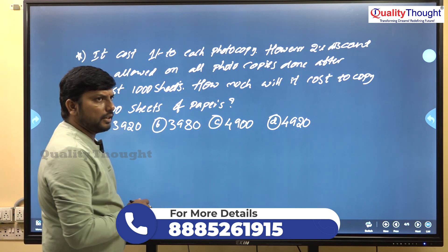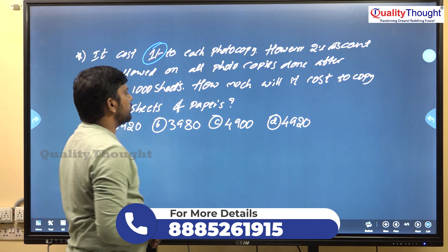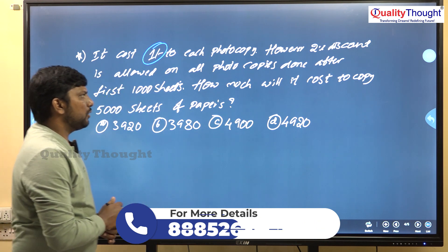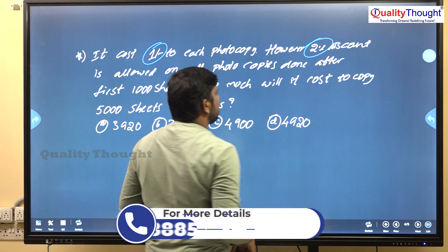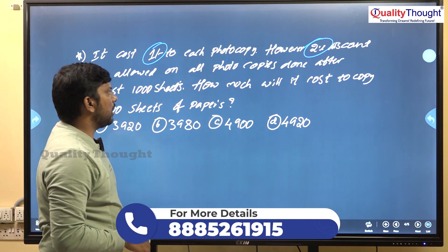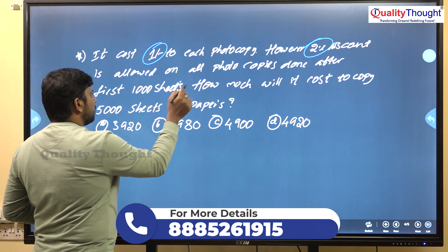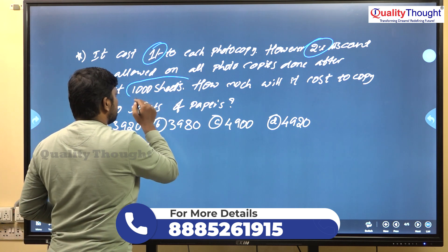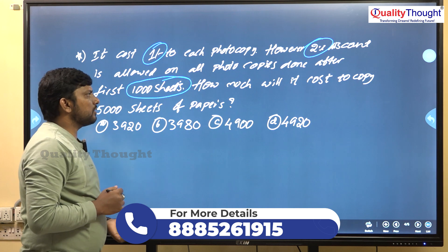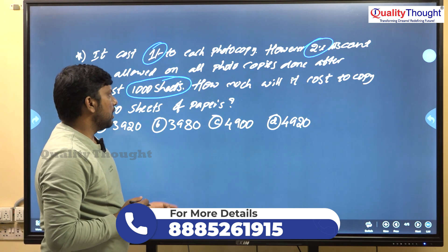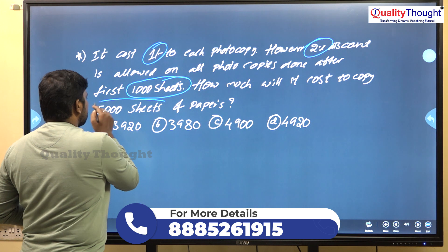Next question: it costs 1 rupee for each photocopy. However, a 2% discount is allowed on all photocopies done after the first 1000 sheets. How much will it cost to copy 5000 sheets of paper?